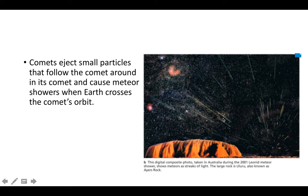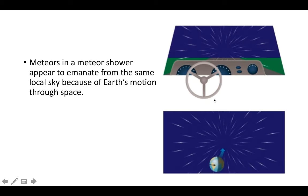Comets eject small particles that follow the comet's orbit, and this can cause meteor showers when Earth crosses that pathway. Meteors in a meteor shower always seem to come from the same local part of the sky. It's kind of like driving your car at night while it's snowing and feeling like you're in warp drive — Earth is traveling through space, so all the meteors tend to originate from the same local direction.